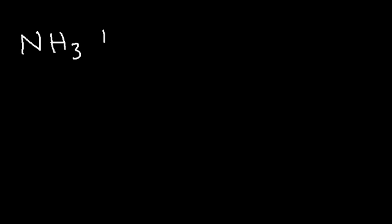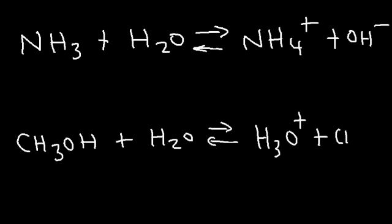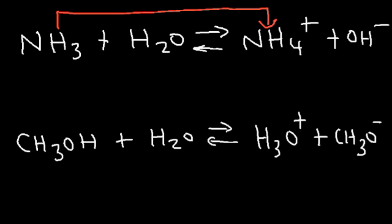Let's try a few more examples to determine which is the Brønsted-Lowry base and which is the Brønsted-Lowry acid, and identify the conjugate acid and conjugate base on the right. In the first reaction, NH3 gains a hydrogen ion going to NH4⁺, so NH3 is the proton acceptor — the Brønsted-Lowry base — and NH4⁺ is the conjugate acid.